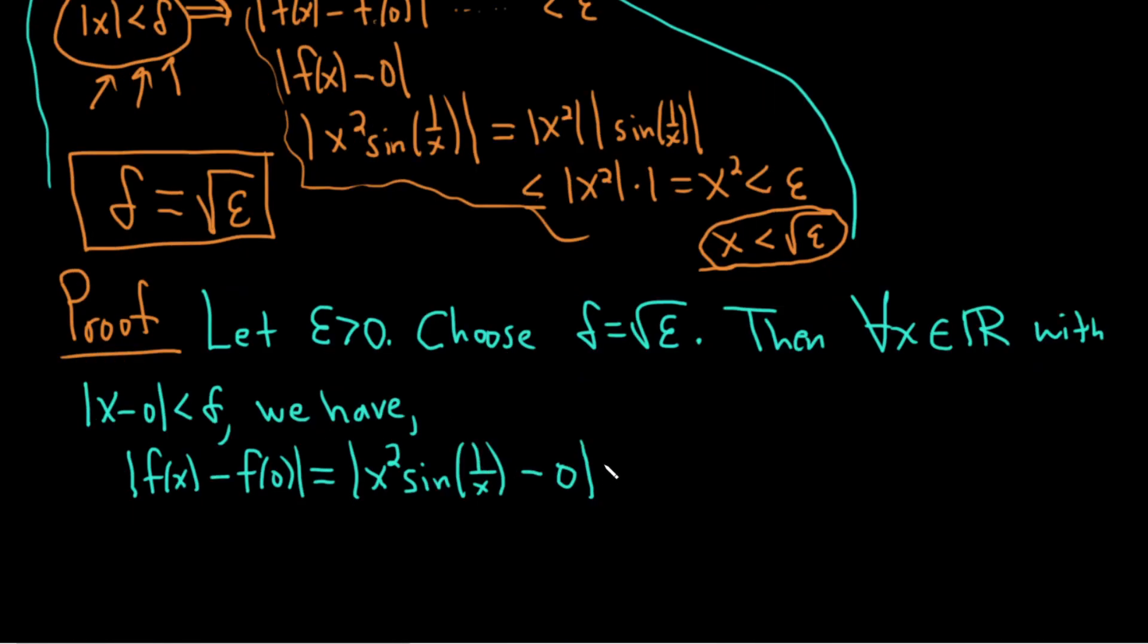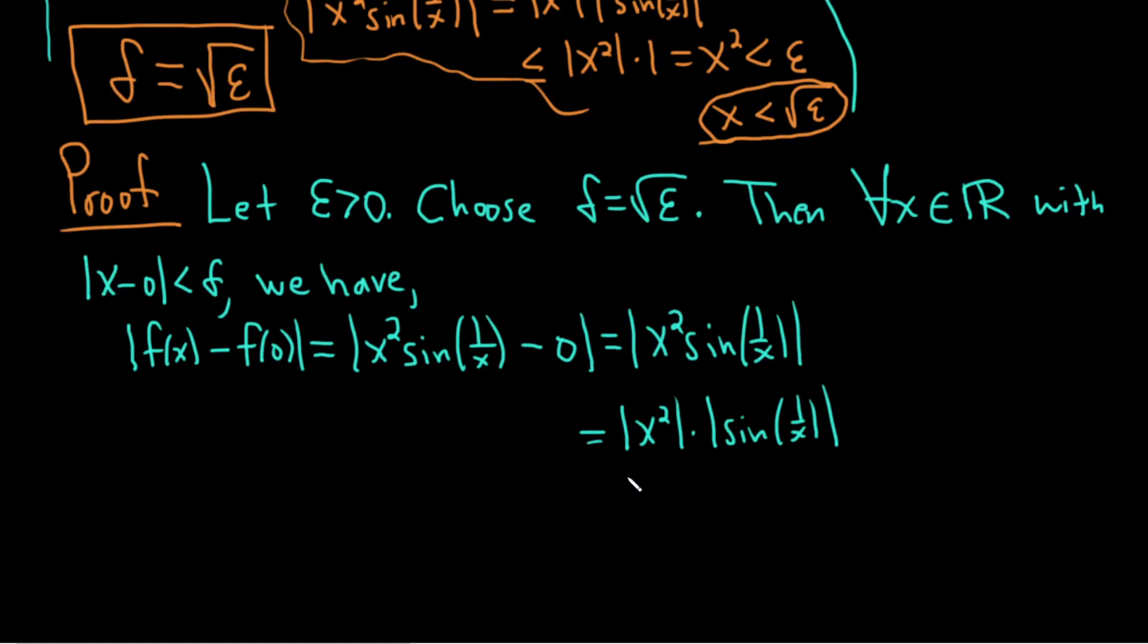Okay, and this is equal to the absolute value of x squared times the sine of 1 over x. And again, we can break this up into two pieces like this. You know, you could skip some steps here. You could have probably just skipped to this here, absolute value of x squared like that. Because,